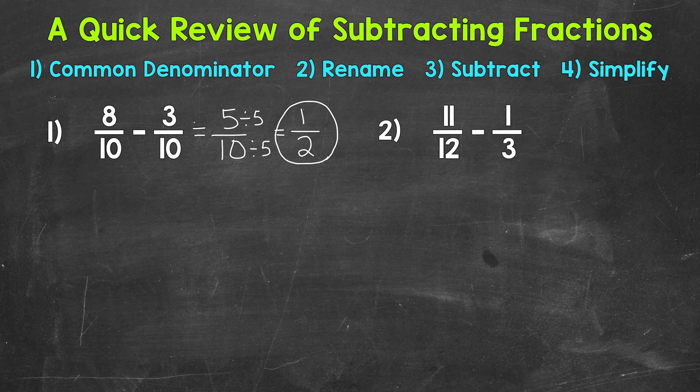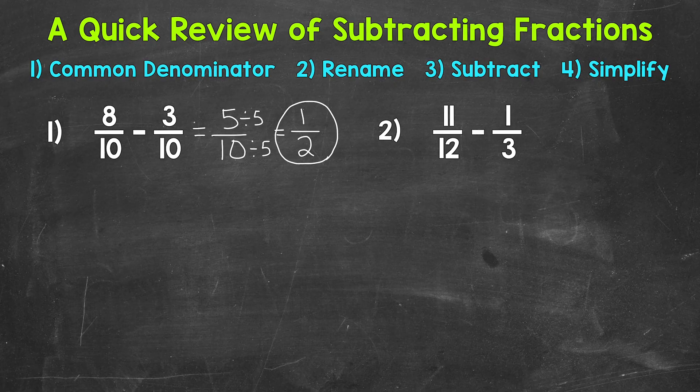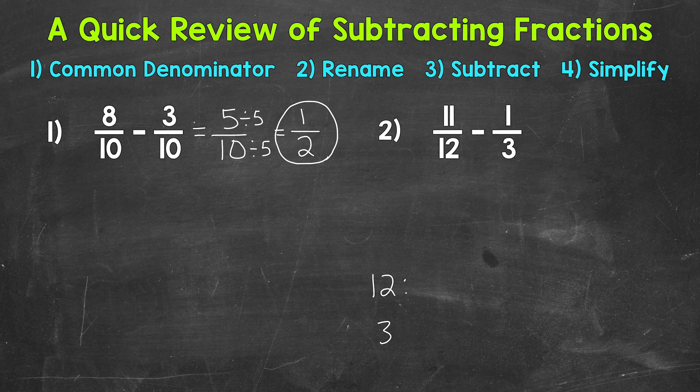Now we can find a common denominator by finding the least common multiple between 12 and 3, and that's going to be our least common denominator. You may be able to think about what that least common multiple is without writing out lists of multiples, but as a review, I'm going to write out some multiples of both 12 and 3 in order to find that least common multiple.